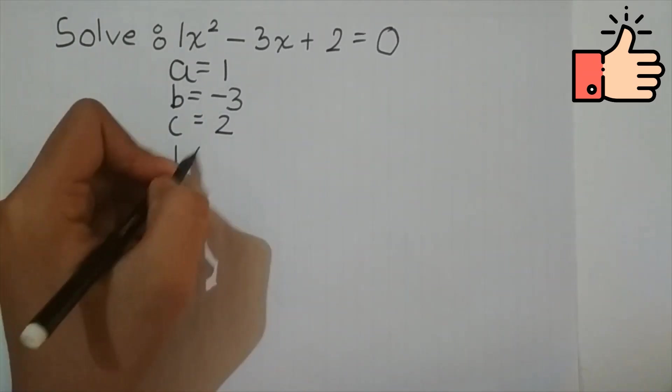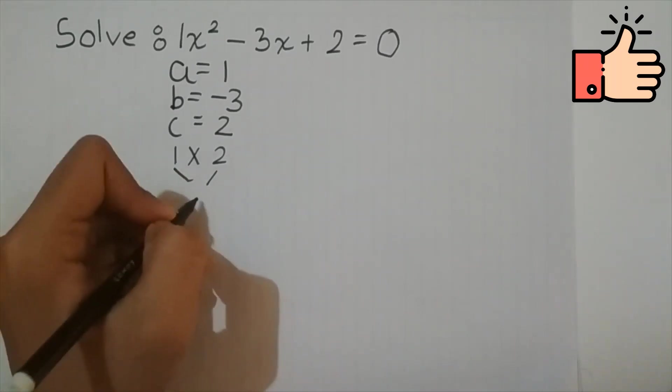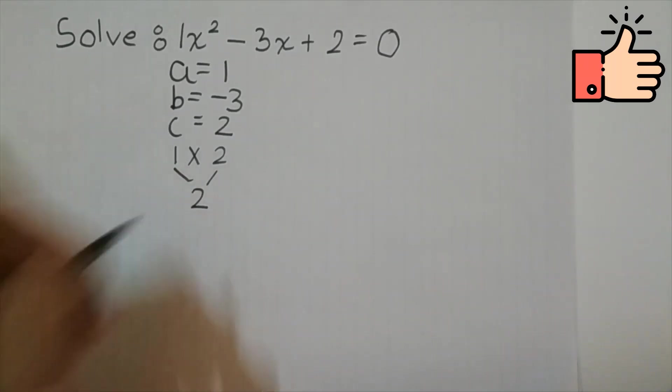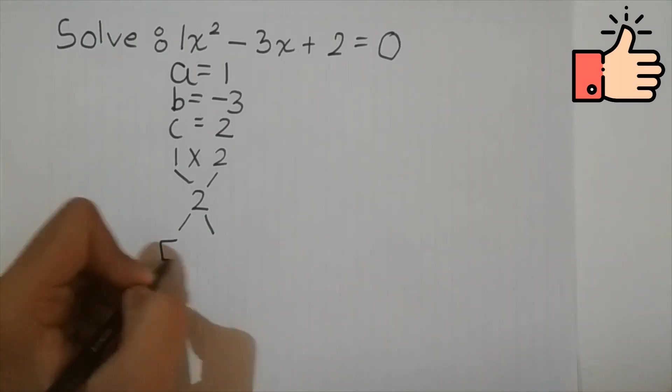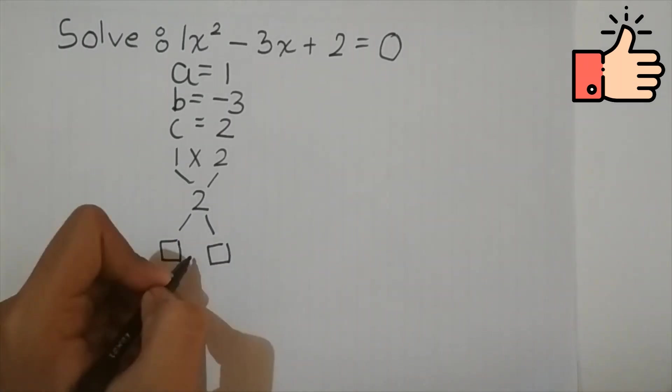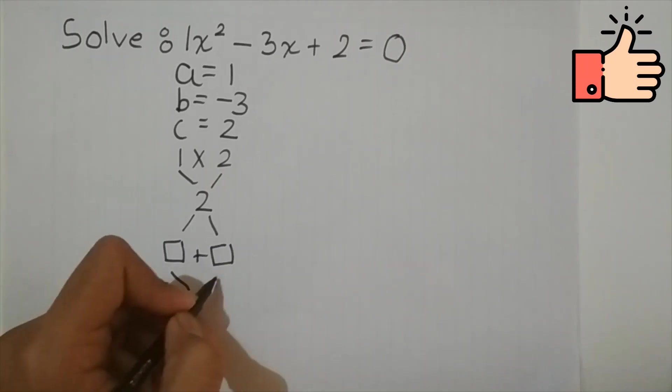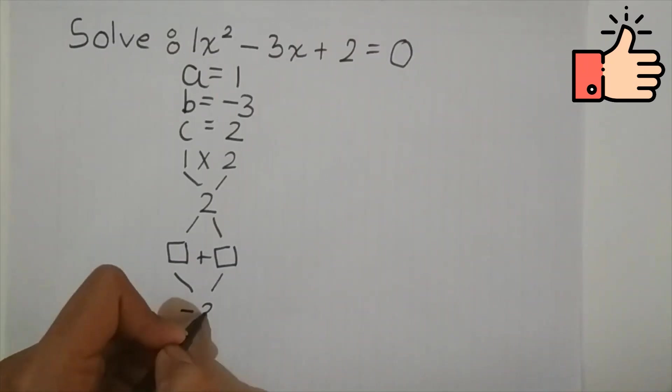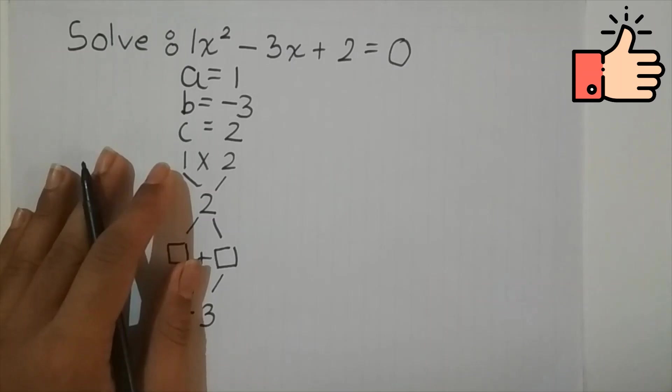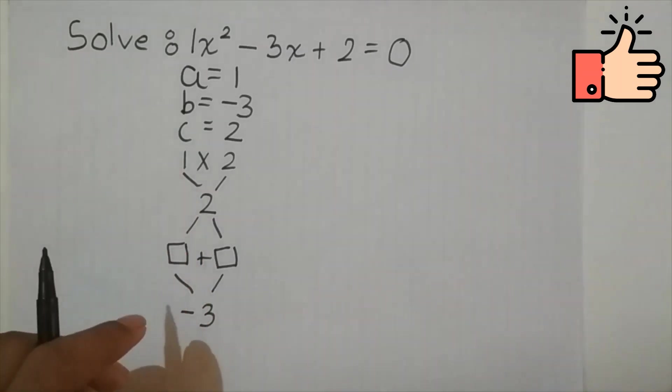So 1 into 2 is 2. And here goes the two factors when added will give us minus 3. To get minus 3, we have to find two numbers that will add to minus 3 and also their product will be 2. So they can be minus 1 and minus 2, as negative into negative is positive, and their sum will be minus 3.